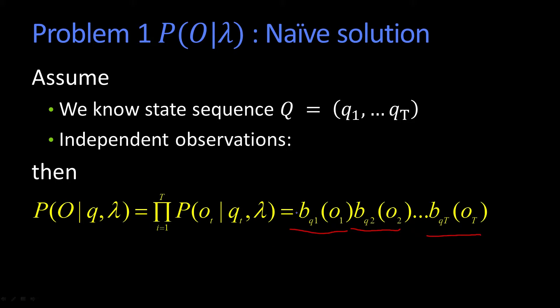So b of q1 of o1 means the probability, given that I'm in q1, whatever q1 happens to be, of outputting o1 and et cetera.